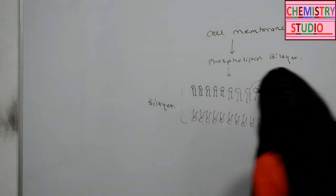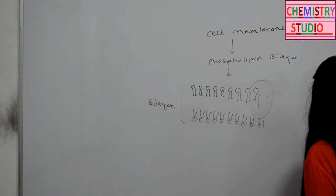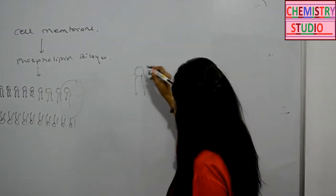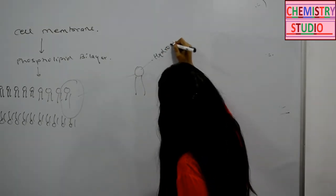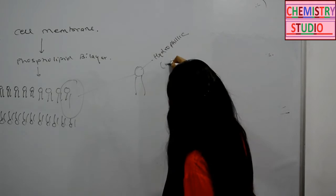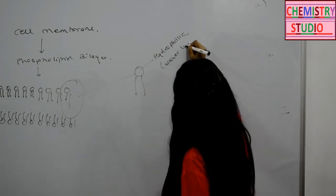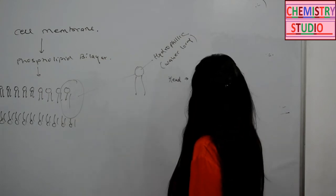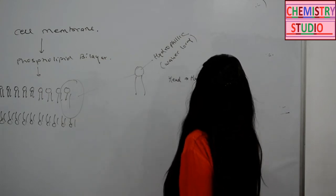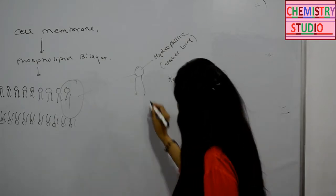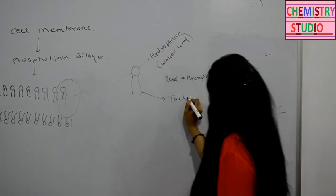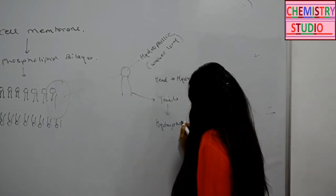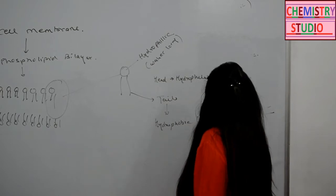There are two regions in the membrane. One is hydrophobic and the other is hydrophilic. The hydrophilic region means water-loving. So the head that is present is hydrophilic, whereas the tail is hydrophobic. Hydrophobic means water-repelling.